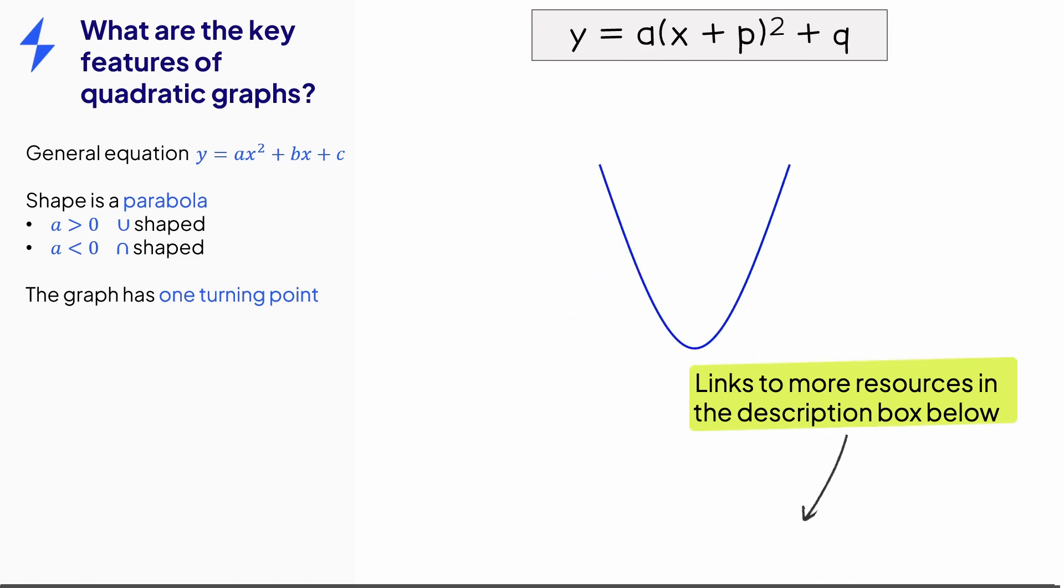The equation of a quadratic graph can be rewritten by completing the square. In this form, it's easier to spot the coordinates of the turning point. To find the y-coordinate, we make the square term zero, so we just get y equals q. And to find the x-coordinate, we need the value of x that makes the square term zero, so x would equal negative p. So the coordinates are negative p, q.